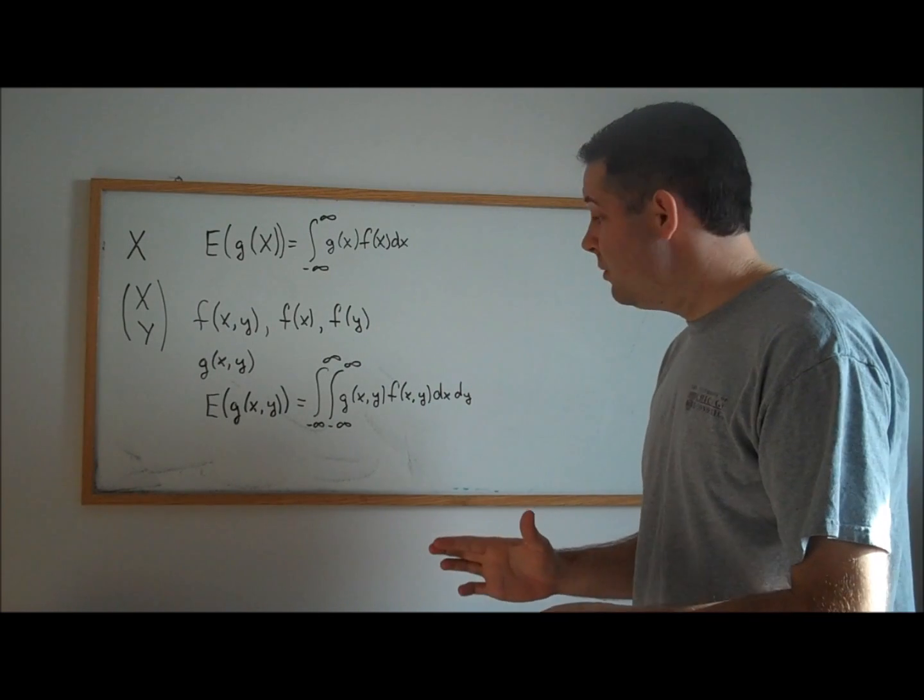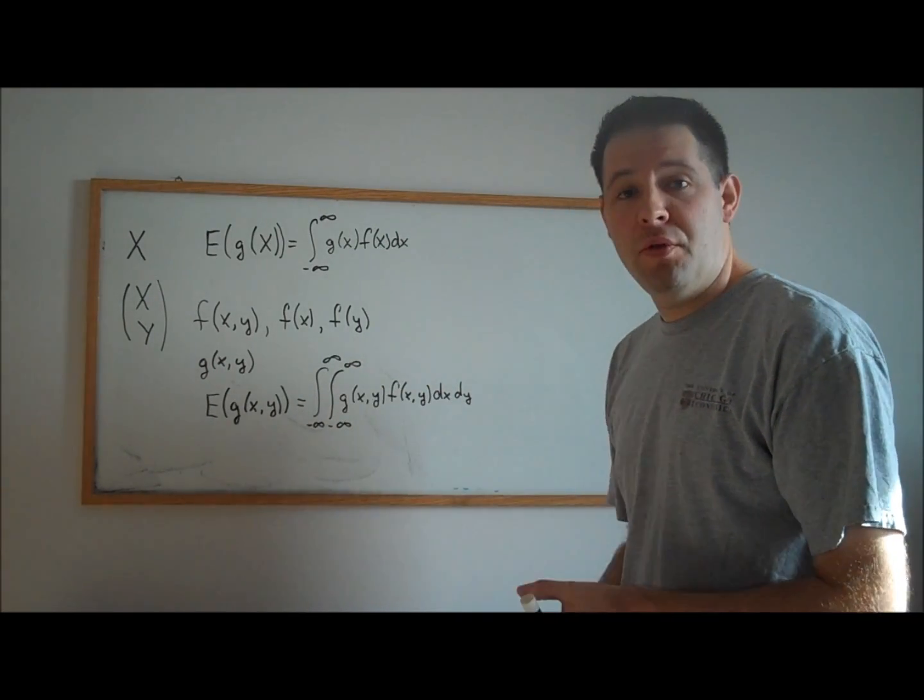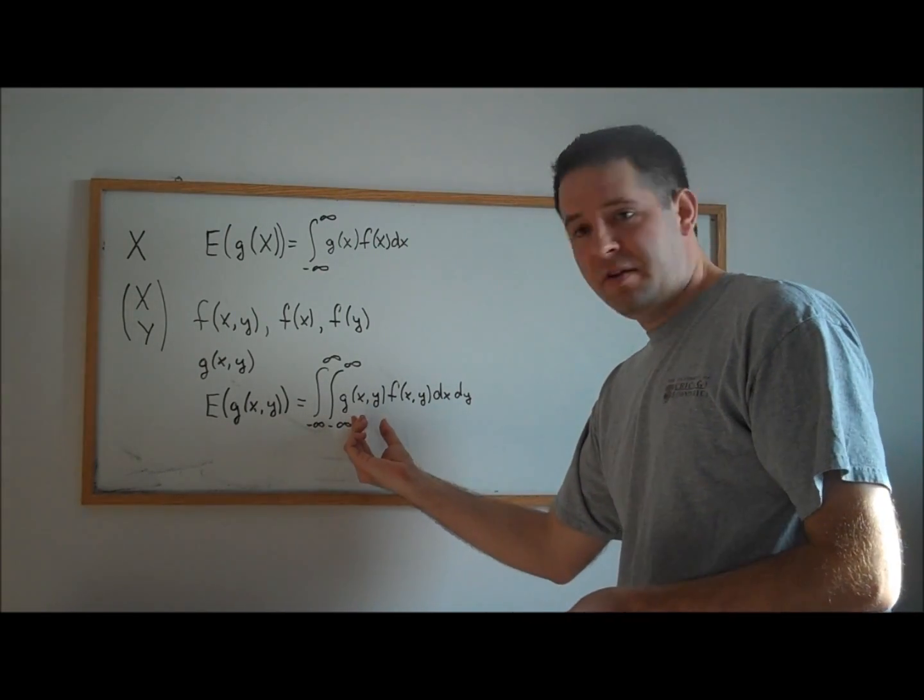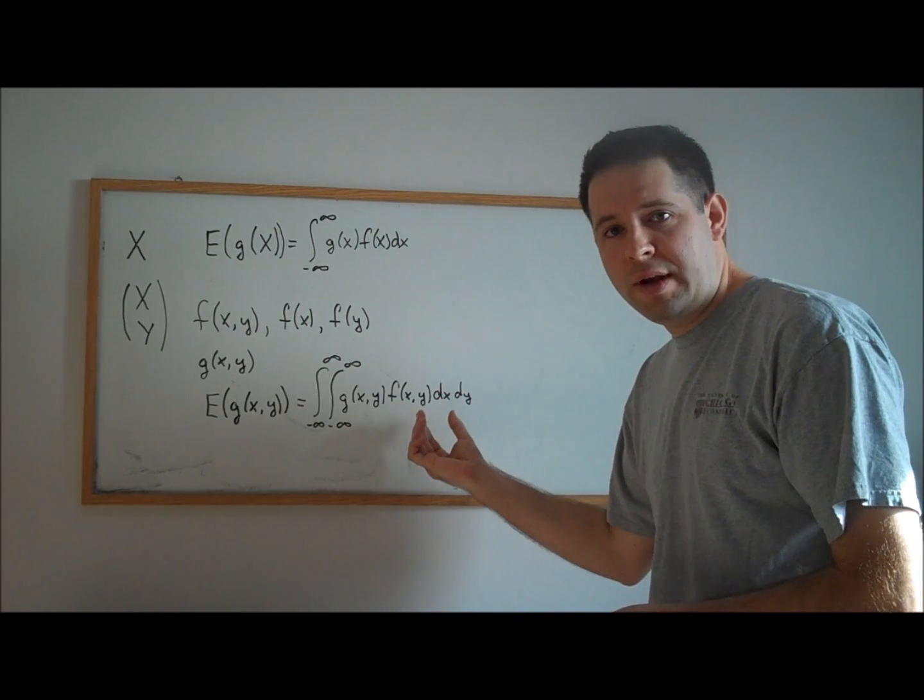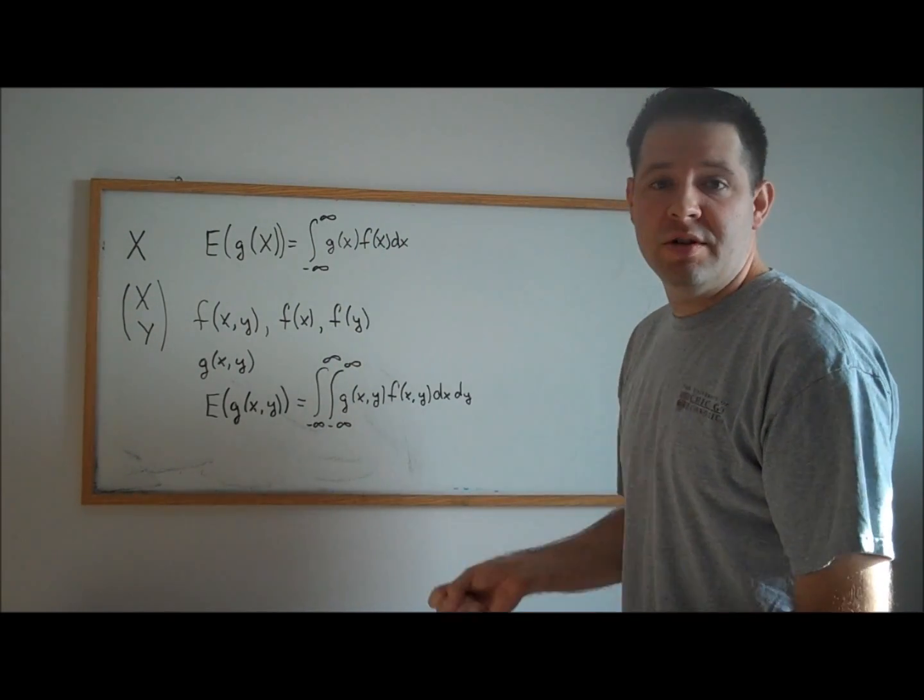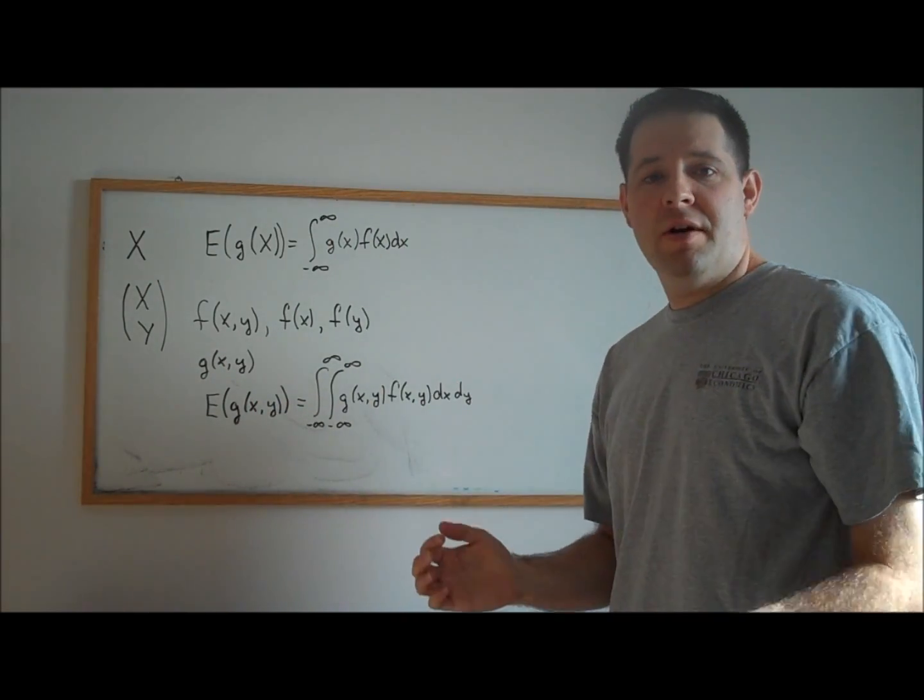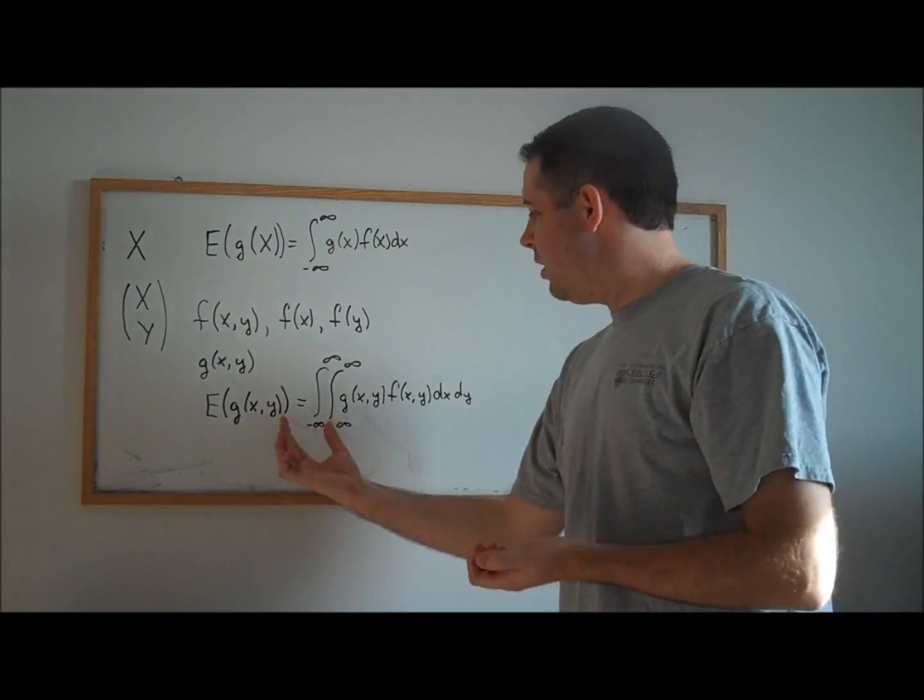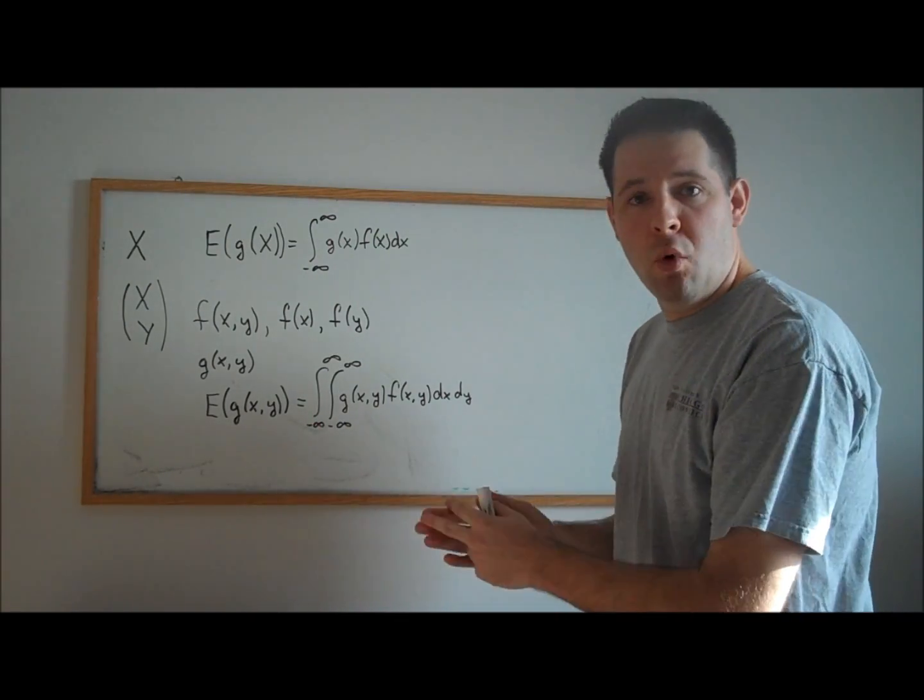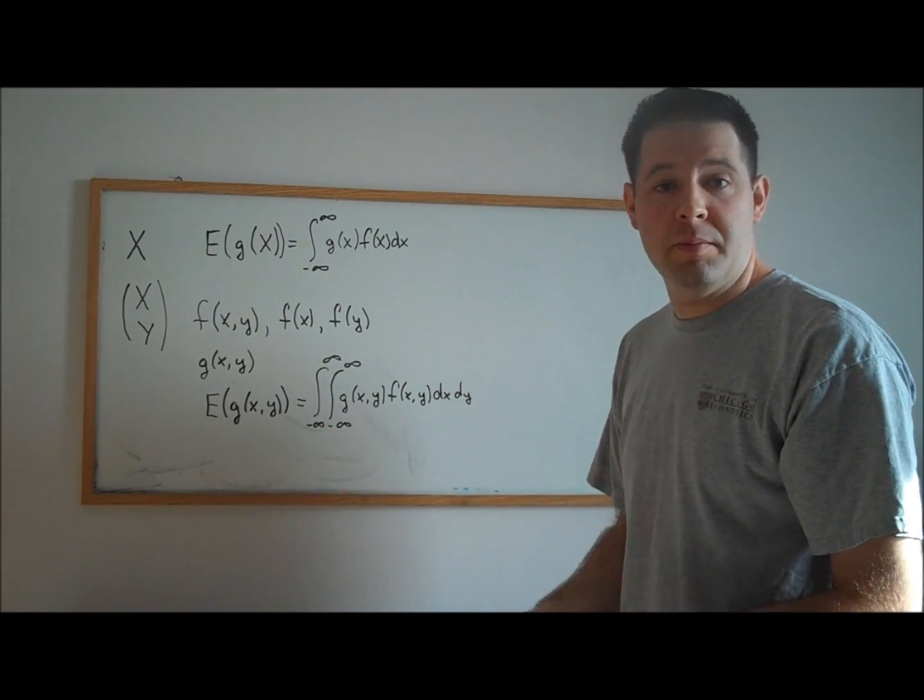We can use a similar formula to the one we used in the univariate case. Because we have two random variables, we need to integrate out both of those variables. We replace g(X) with g(X,Y), and we replace the marginal distribution of X with the joint distribution of X and Y. If you have more elements to your random vector, you have more integrals and more arguments to your function.